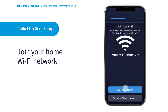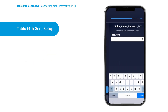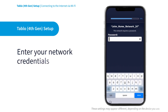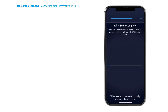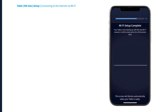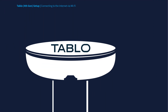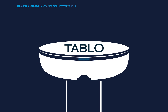Then select your home Wi-Fi network and enter your home Wi-Fi network password. Wait for the blue LED light on the Tableau device to stop pulsing and become solid. Your Tableau should now be connected to your home's Wi-Fi network.